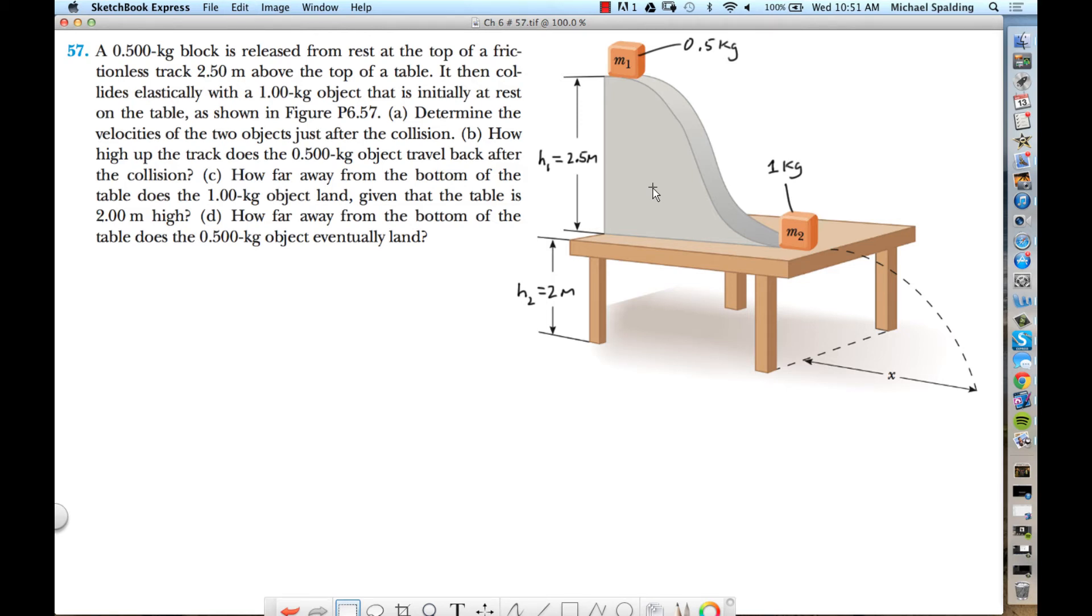Alright, this block M1, half a kilogram, is released from rest at the top of this hill and then slides down and smashes into block two, which is one kilogram sitting at the bottom of the ramp. And they say the magic word here: elastically. Now when you see that word, you know you're in for some algebra. So what does the word elastic mean?